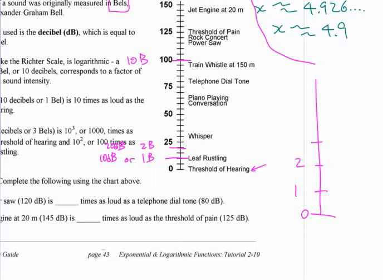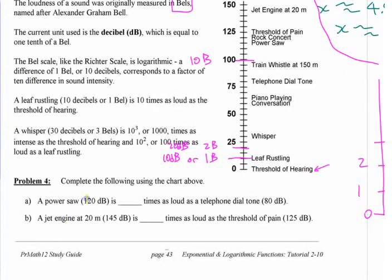The two things that they picked out here were, to start with here, a power saw, which is 120 decibels, or how many bells is that? 12 bells. And a telephone dial tone. I find this hard to believe that this is 80 decibels. I think what they meant is like a telephone ringing, but I don't know, whatever. It depends on how loud your phone is.